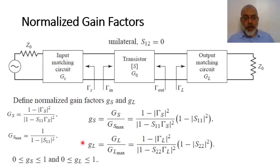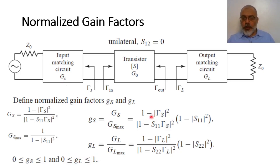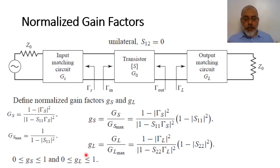It should be noted that the normalized gain factors g_S and g_L are greater than or equal to zero and less than or equal to unity. When g_S = 1, the input matching gain is at the maximum value. When g_L = 1, the load matching gain is at the maximum value. When g_S = g_L = 1, the amplifier is designed for maximum gain. For constant gain amplifier design, we use g_S and g_L slightly less than unity. If they are zero, there is no amplification.